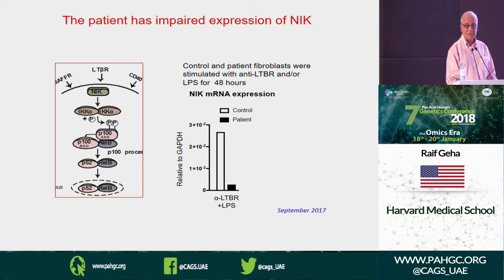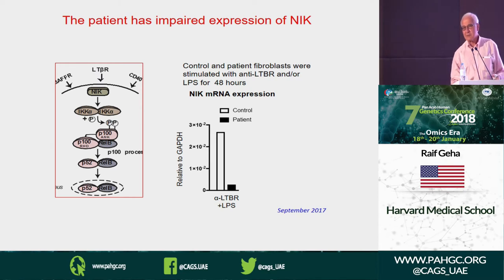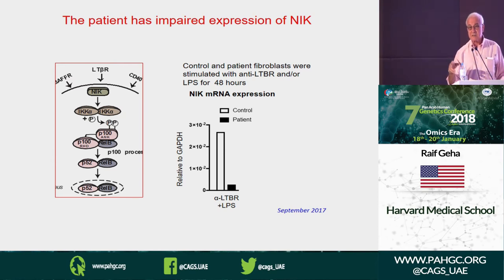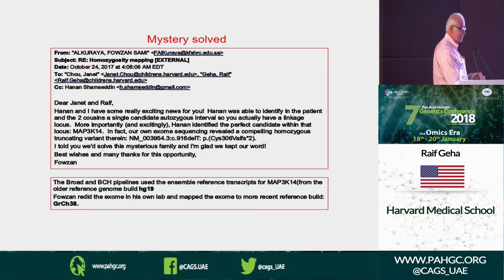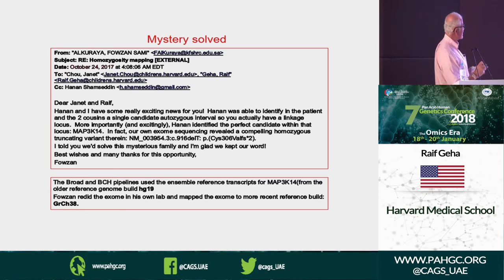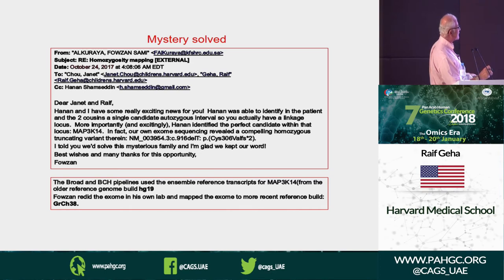That friend happened to be sitting in the front row — his name is Fawzan. I called him and said we have a problem. He said, 'Send me some DNA.' By that time we had finally obtained blood from two cousins who didn't have mycobacteria but were hypogammaglobulinemic. Fawzan took the data. He sent an email saying: 'I have some really exciting news — we were able to identify in the patient and the two cousins a single candidate autozygous interval and there is a gene called MAP4K4 with a frameshift.'